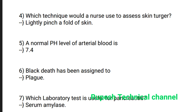Question number 4: Which technical word does a nurse use to assess skin turgor? Lightly pinch or fold of skin. Question number 5: The normal pH level of arterial blood is 7.4. pH stands for power of hydrogen.